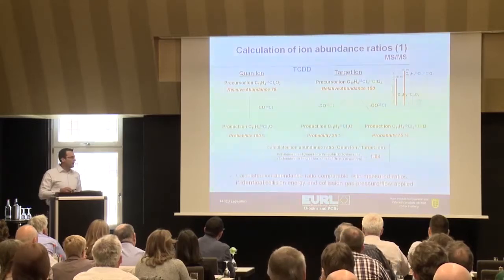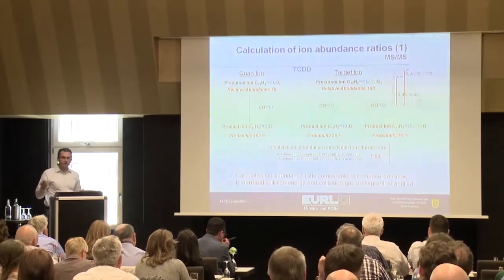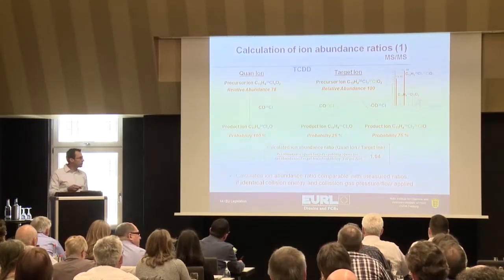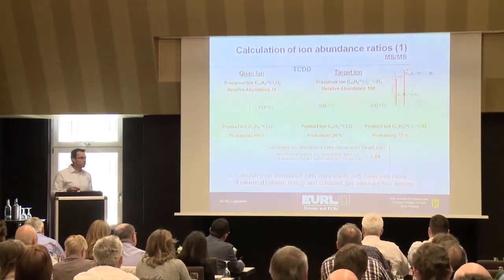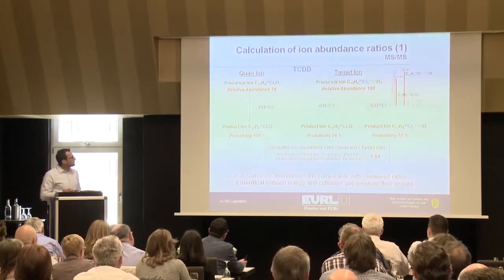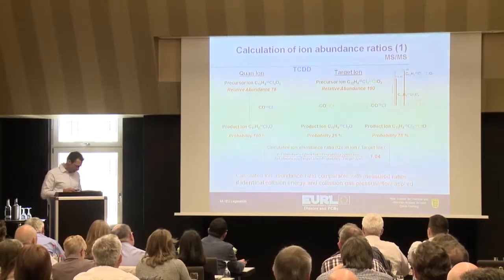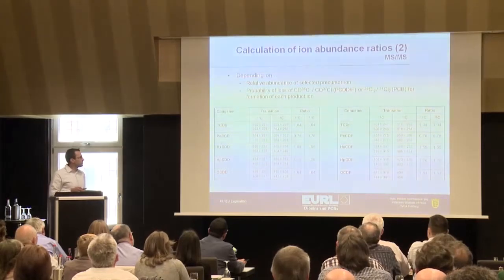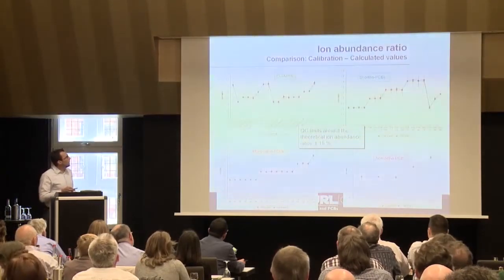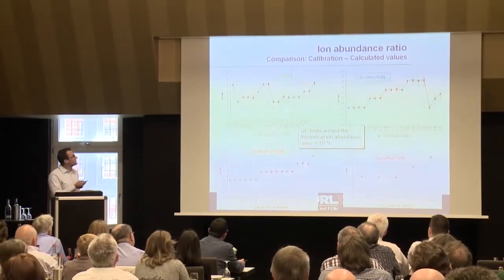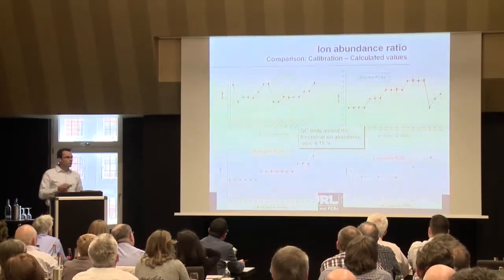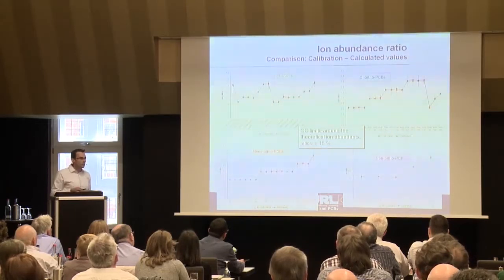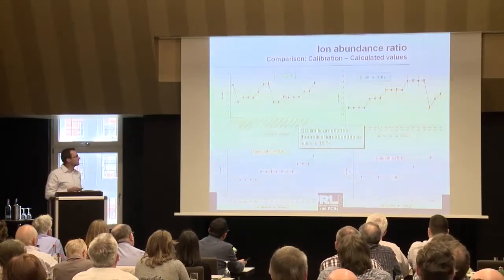You can then calculate an ion abundance ratio for all relevant congeners — dioxins and PCBs. It is very important to mention that these calculated ion abundance ratios are only comparable if you use identical collision energy and collision gas pressures for each of the transitions. These are the calculated values — you can do it for dioxins and for PCBs. Comparing these calculated values with calibration data for dioxins, di-ortho, mono-ortho, and non-ortho PCBs, the measured values are easily within the range of plus-minus 15% for a calibration curve. For lower values, of course, this can be difficult.